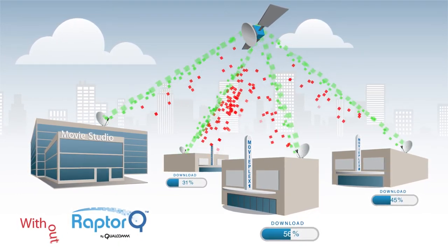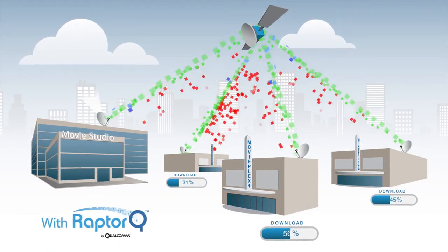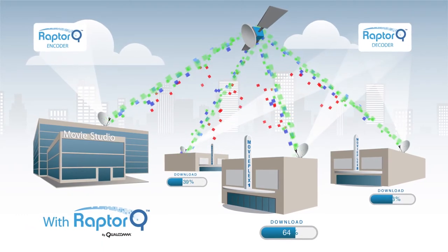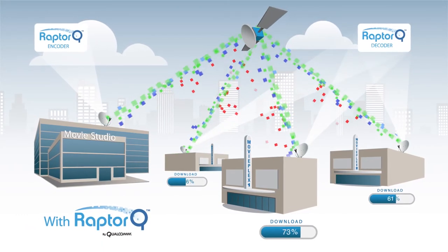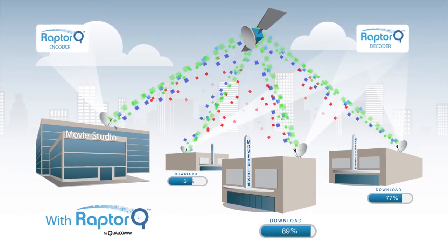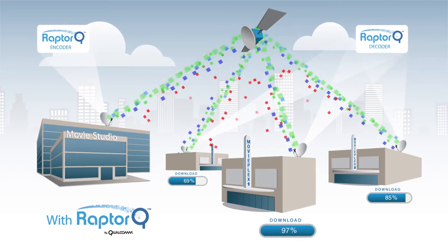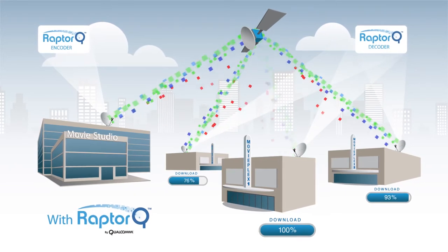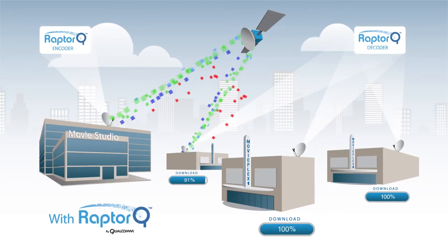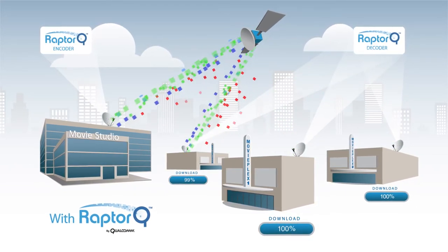Now, with RaptorQ, the same movie files can be delivered much more efficiently by adding RaptorQ-encoded repair data into the content stream, eliminating the cost of resending lost data packets.